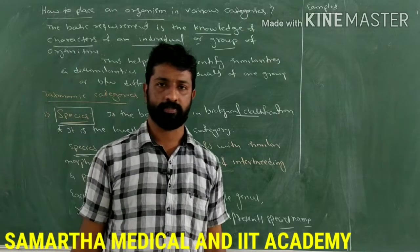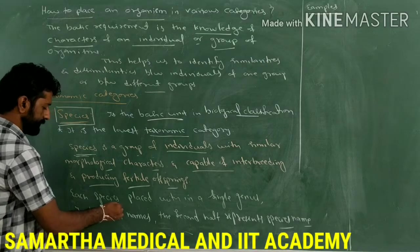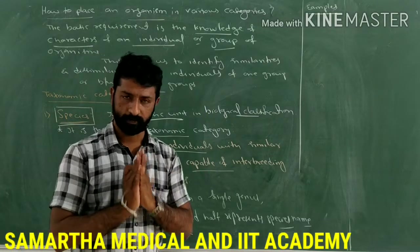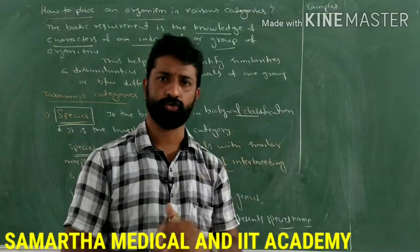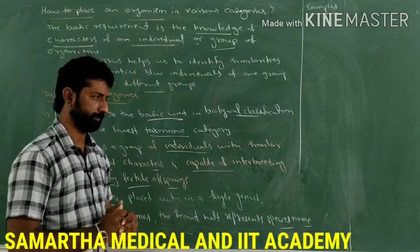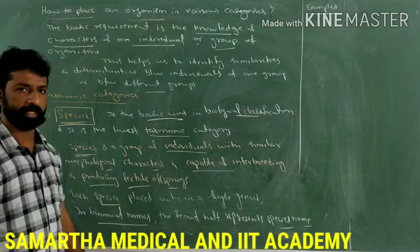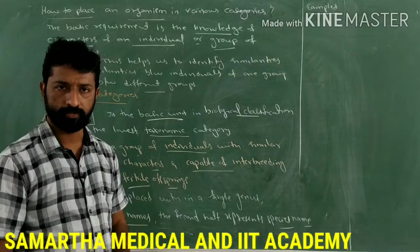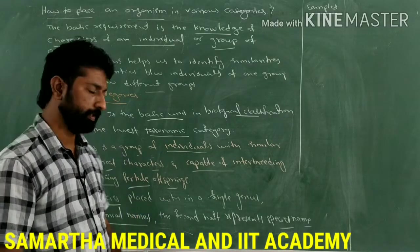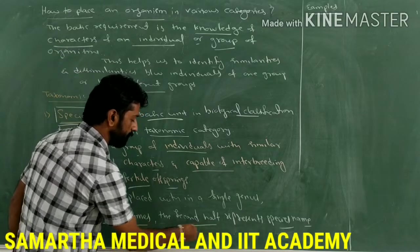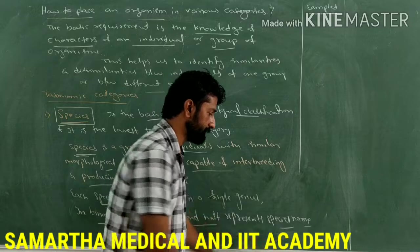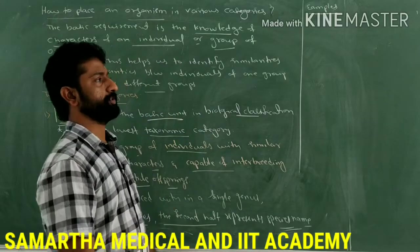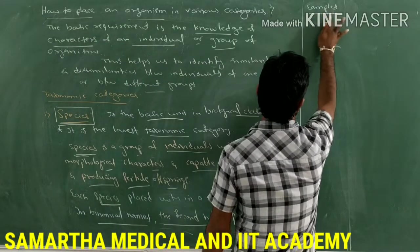Each such species is placed in a single genus — one species belongs to one genus only. The binomial names, or biological names, or scientific names, have two components: the generic name and the specific epithet. In binomial names, the second part always represents the species name. Let us understand this with examples.